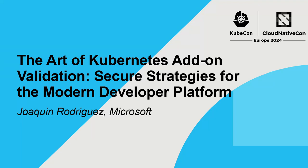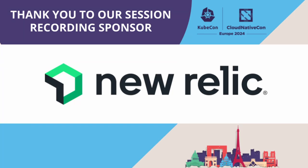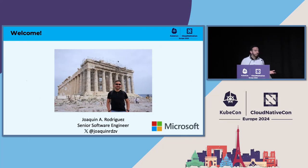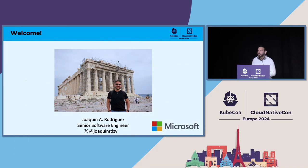Well, let's get started. Welcome. This is the art of Kubernetes add-on validation, secure strategies for the modern developer platform. My name is Joaquin Rodriguez. I'm a software engineer at Microsoft, based in Austin, Texas.